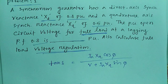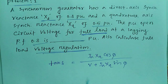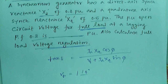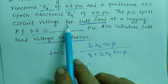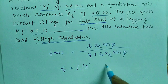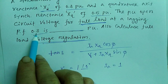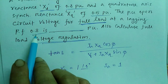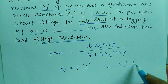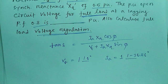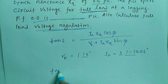In the per unit system, we take the terminal voltage Vt as 1 per unit at an angle of zero degrees. The machine is supplying full load, so Ia is also 1 per unit. At 0.8 lagging power factor, the current angle is minus 36.86 degrees. So tan(δ) will be calculated as follows.